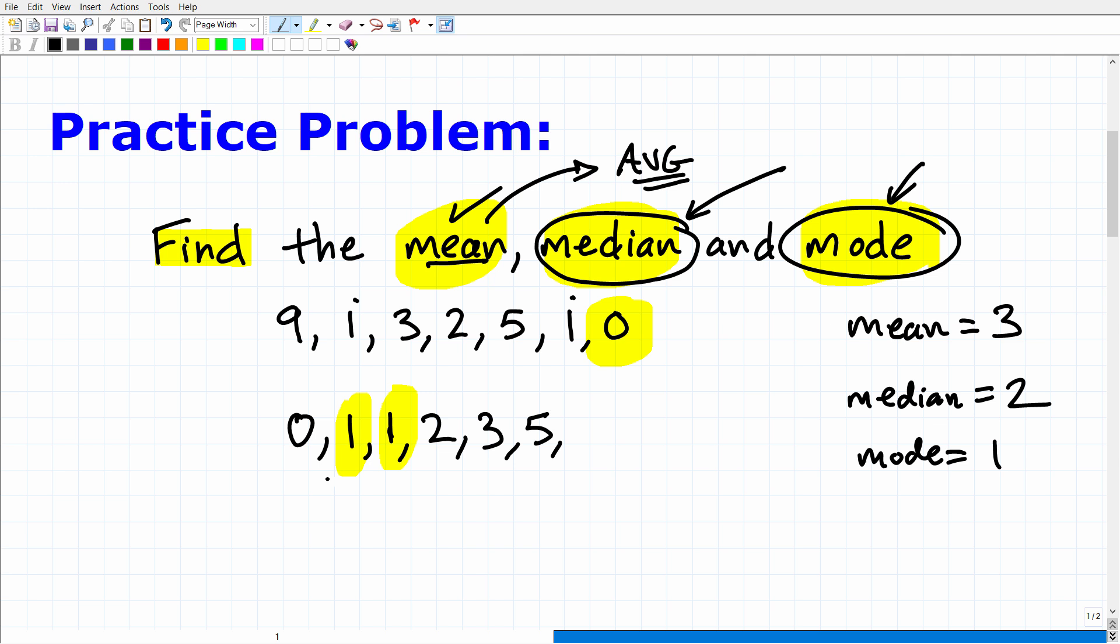So if you understand that, again, if I just had, let's say, these numbers, 0, 1, 2, 3, and 5, well, no number shows up the most. They're all just show up one time. So there would be no mode. But this is the mean, median, and mode for this basic data set.